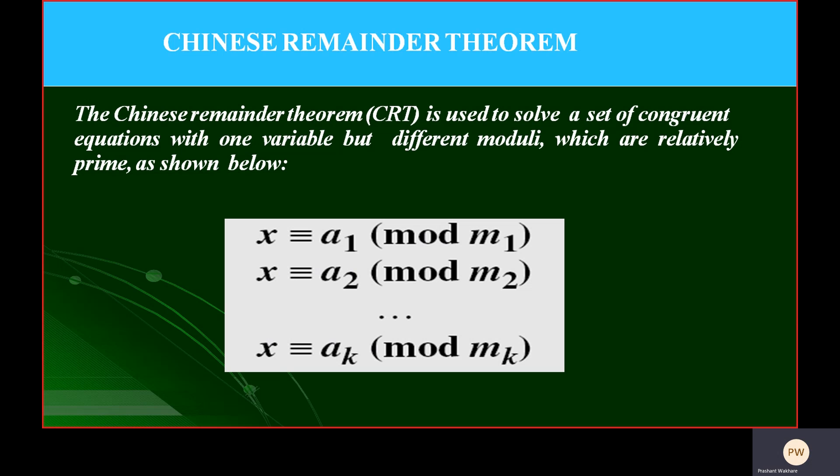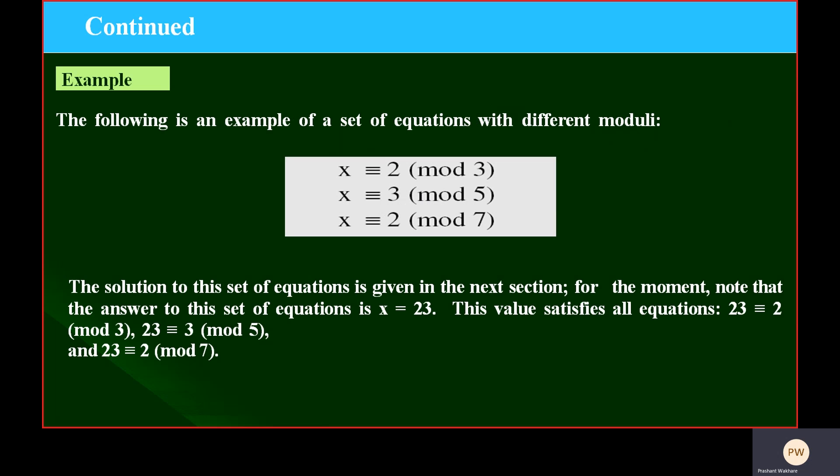We will see through an example. Here is one example. In this example, there is X, X, X - this is only one variable. But if you see here, 2 mod 3, 3 mod 5, and 2 mod 7, there are different moduli.